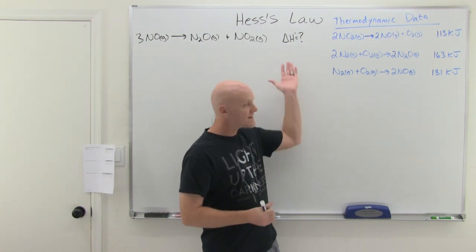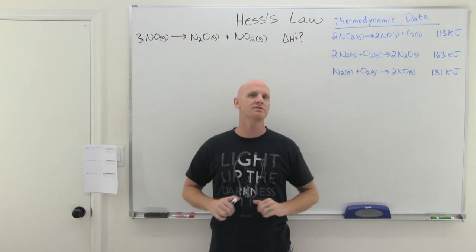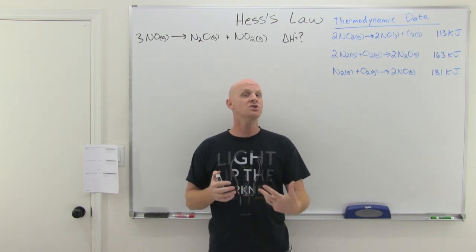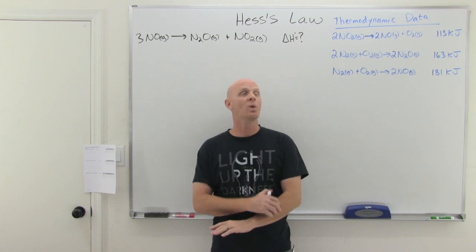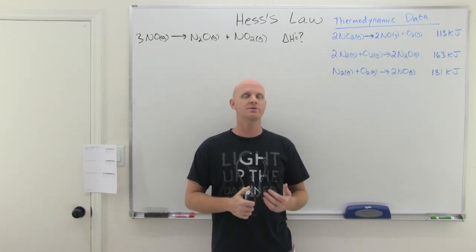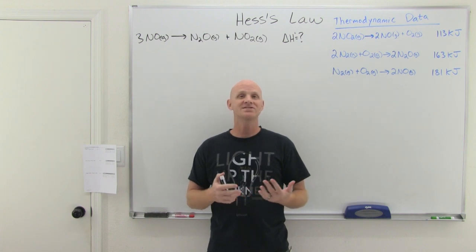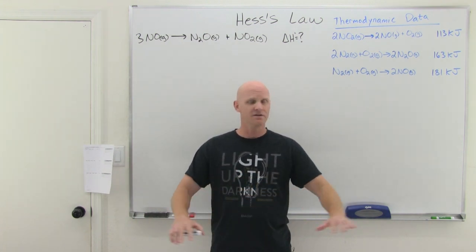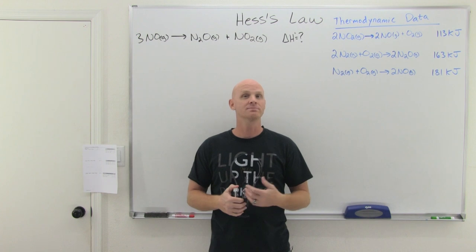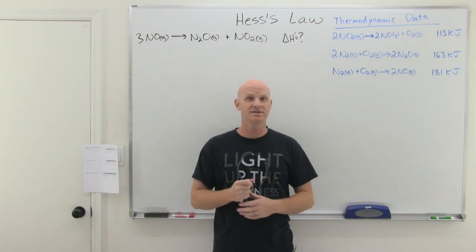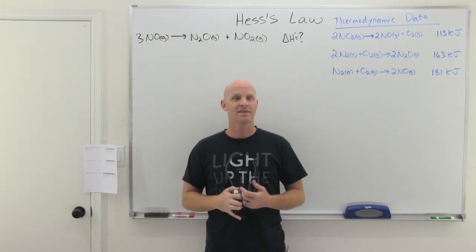We're going to start with Hess's Law, and then we'll save the last part of the lesson for enthalpy of formation. Both of these are going to be separate distinct methods for calculating the delta H of the reaction, so they should ultimately lead to the same answer. The second method involving enthalpy of formation is going to be way easier. Hess's Law is going to be a little bit of a pain, but hopefully we can make it easier. The idea for both methods is that delta H is a state function - it is independent of path. As long as you have the same initial state and final state, it doesn't matter how you get there.